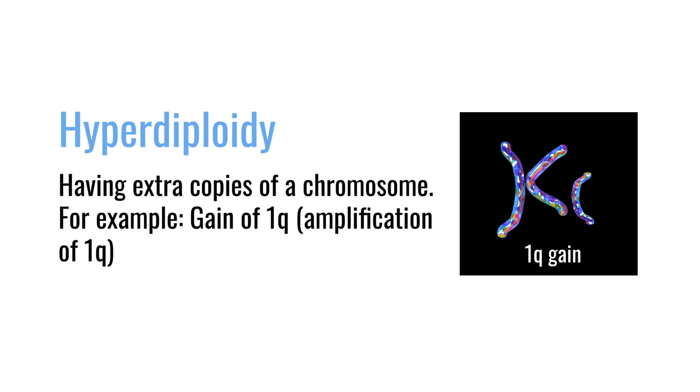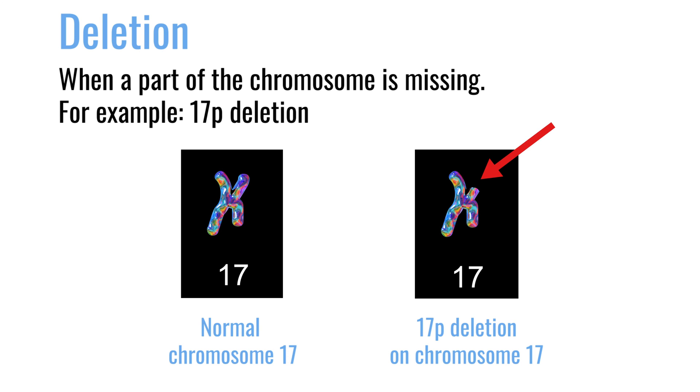Hyperdiploidy is simply an extra copy of the whole chromosome — they tend to be odd-numbered chromosomes. The most important one is gain of 1q and amplification of 1q, so that's copy number gain. And then there are other structural abnormalities: when you break apart, you can lose a bit of information — that's called an interstitial deletion, and that can take away a gene totally. And if you copy up a specific region, that's called an interstitial gain or amplification.